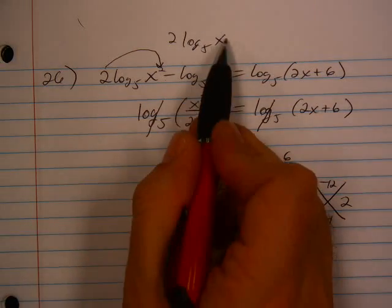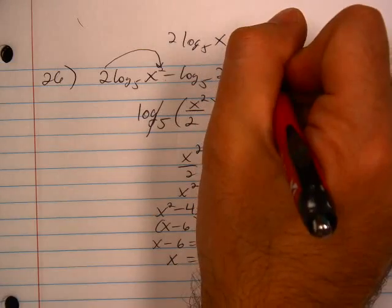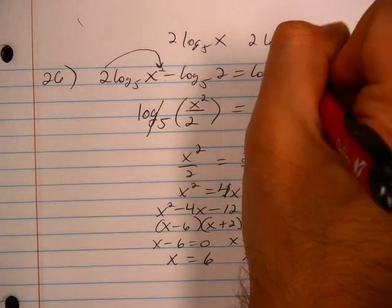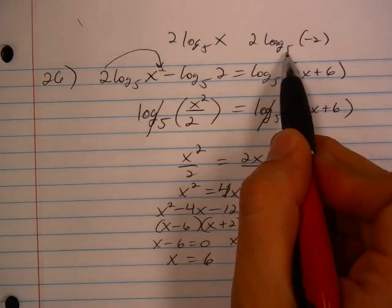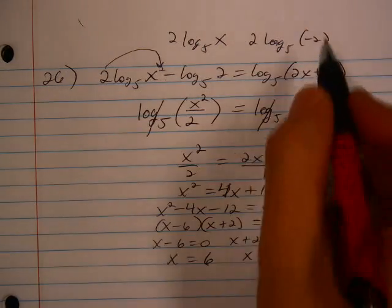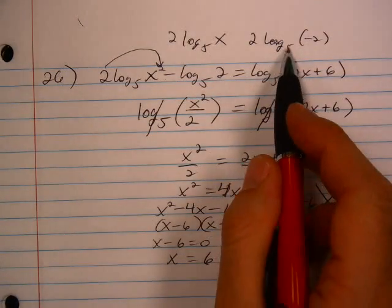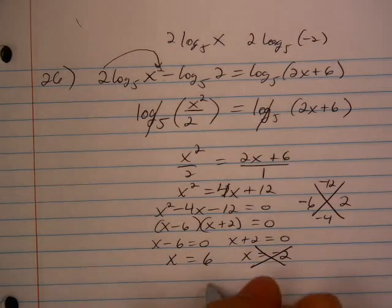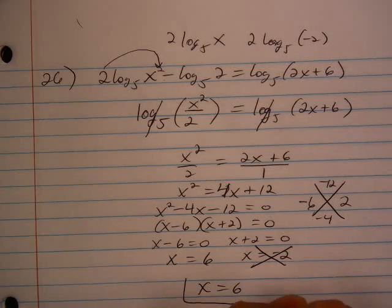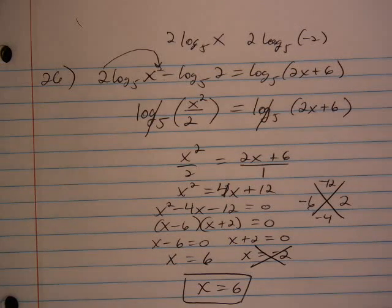If we take this x out and make it a negative 2, 2 log 5 of negative 2, this is saying 5 to some power to give us negative 2, which is not possible. No exponent will make a 5 turn into a negative 2, which means our only solution on number 26 is x equals 6.